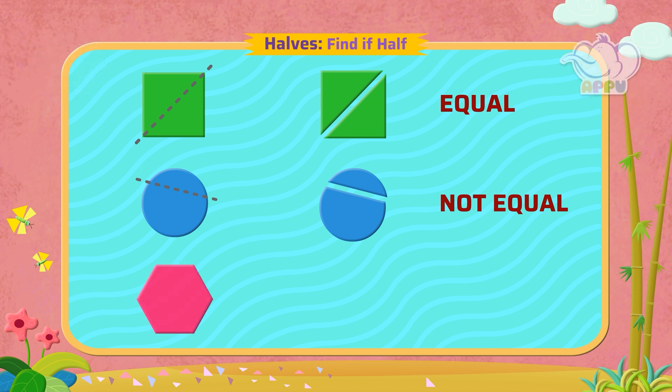Let's cut the shape along the dotted line. This shape is cut into two parts now. Let's compare the two parts by placing it over each other.